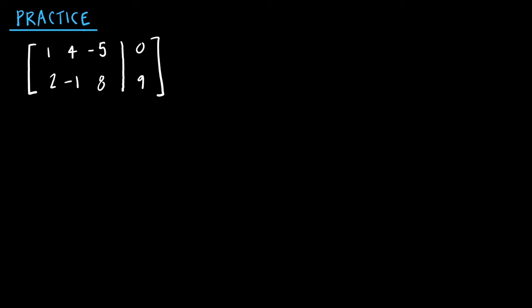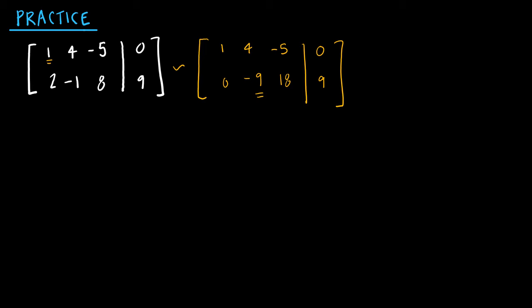This is a non-homogeneous equation because the last column is not all zeros. Let's do the same row operations as before. I've got a pivot here of 1, so I want everything below that pivot to be 0. I'm going to take negative 2 times row 1 and add it to row 2, giving me 0, negative 9, positive 18, and positive 9. Now I want this to be my pivot, so I'll take row 2 times negative 1 ninth, giving me 0, 1, negative 2, negative 1. Row 1 remains unchanged.